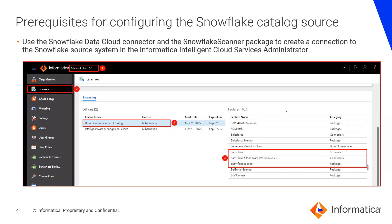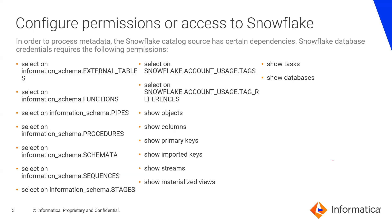Before starting scanner configuration in the MCC app, the very first step is to check for required licenses. Log into IDMC Administrator, navigate to License, and for Data Governance and Catalog, check for the Snowflake Catalog Data Warehouse V2 connector and Snowflake Scanner package. Make sure to configure required permissions from the Snowflake database end.